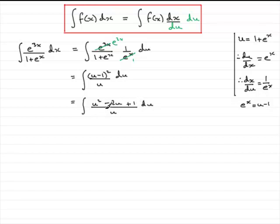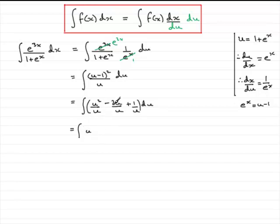So we put each term over u: u squared over u, minus 2u over u, plus 1 over u. We can simplify: u squared over u is simply u, then minus 2, and then 1 over u — I'll leave it as 1 over u rather than u to the minus 1, because people often forget what's coming with that form.